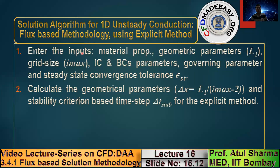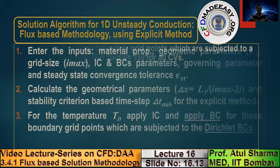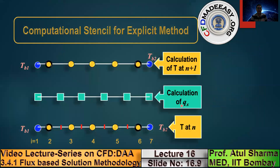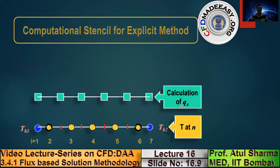After the user enters inputs corresponding to their problem, the program calculates geometric parameters. In a uniform grid, only one geometric parameter needs to be calculated: the width of the control volume delta x. When calculating qx for the first point near the boundary, the distance between the blue circle and the border yellow circle is delta x/2. So there are two values involved — delta x and delta x/2 — when calculating qx values.